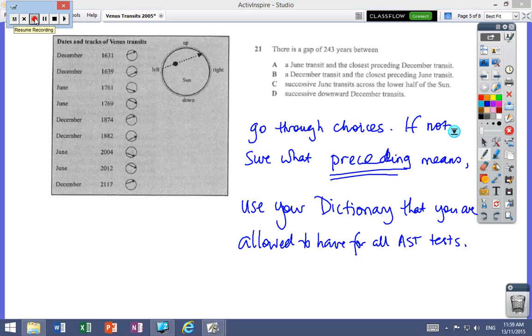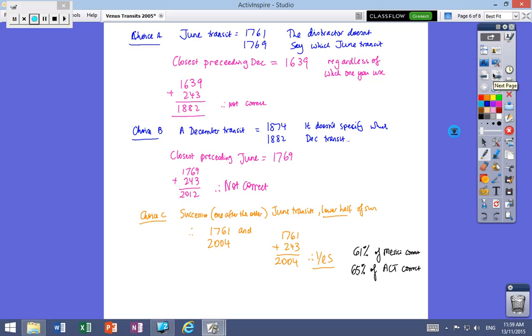We're back again. Information here that I forgot to point out was that gap of 243 years. I'm going to use that gap as an add rather than a subtract. If you look at choice A, the distractor didn't say which June transit, but the closest preceding is 1639. So I add 1639 and 243, I get 1882. That answer's not correct. As you go through each of the distractors, you end up with C being the right answer. This was a little bit better—we were close to the state average.